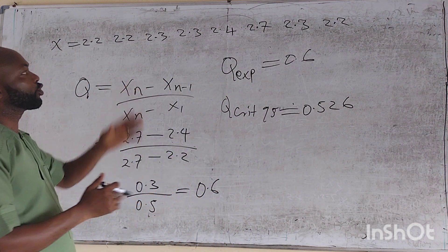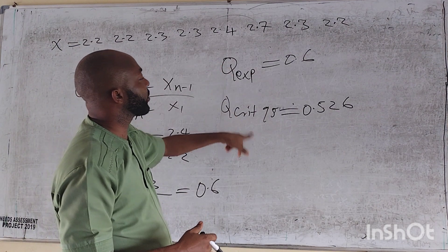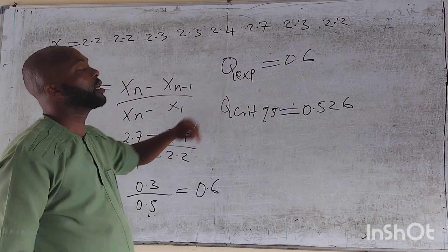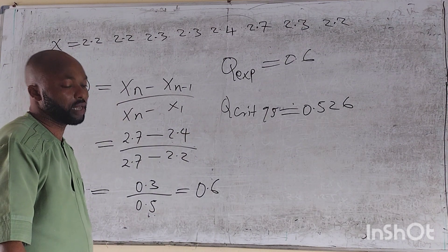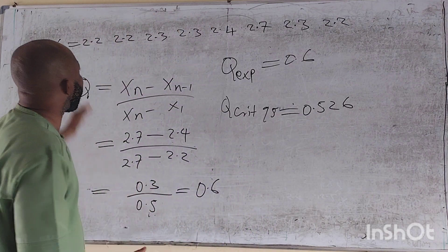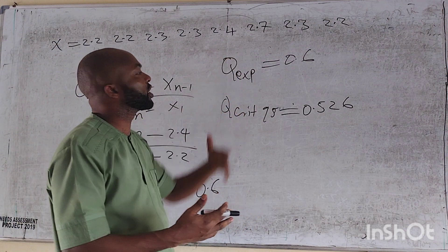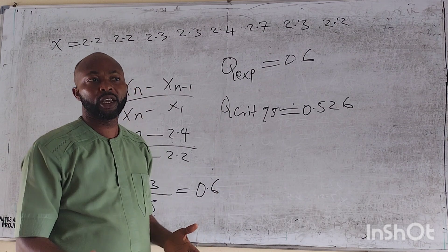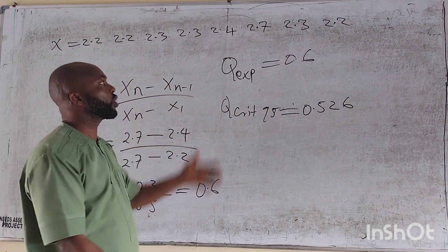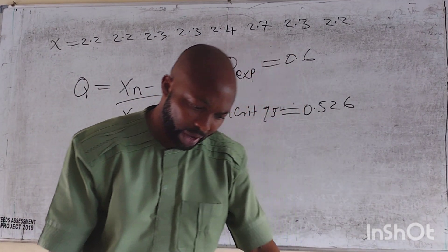For us to maintain or retain 2.7, it says that the Q-critical must be greater than the Q-experiment. But having seen that our Q-experiment is greater than the Q-critical, the variable 2.7 should be rejected because it is less than. So if you were carrying out your titracional question and these are the variables you have gotten so far, and you've discovered that one of the variables seems to be, you'll be thinking should I retain it or throw it? Then you have to apply your Q-test experiment to determine as to whether you should maintain or reject it.